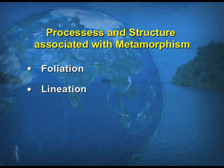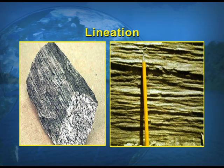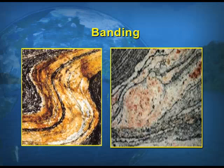The processes and structures associated with metamorphism are very important. There are three types of processes which take place: one is foliation, another is lineation, and the third is banding. Lineation is when mineral grains are drawn out into long, thin, pencil-like objects. Foliation is a continuing process of metamorphism where a large percentage of the minerals are assembled in parallel orientation. Banding refers to the different bands of different colors of the rocks.